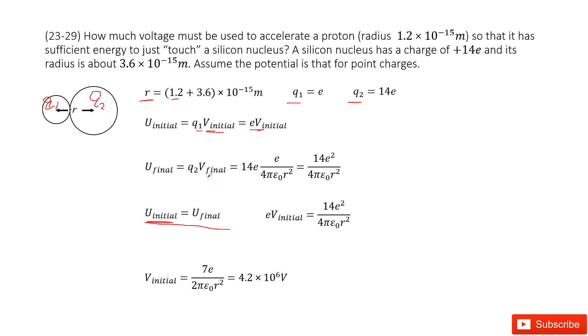And then we look at the final energy. The final energy, we look at Q2. So we can see, use the charge for Q2 times the final potential. So the final potential comes from the electric potential from Q1. So it is 14e² over 4πε₀r². And then it can be simplified as this one.